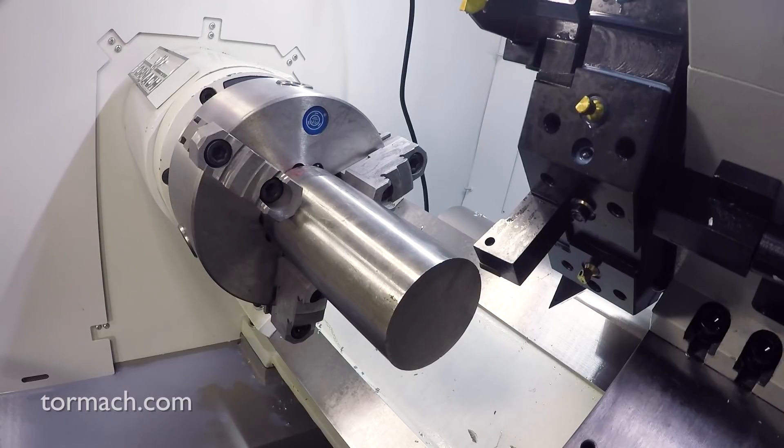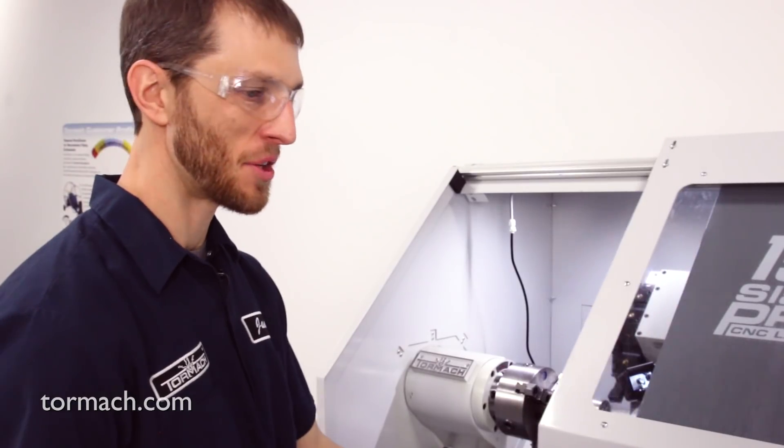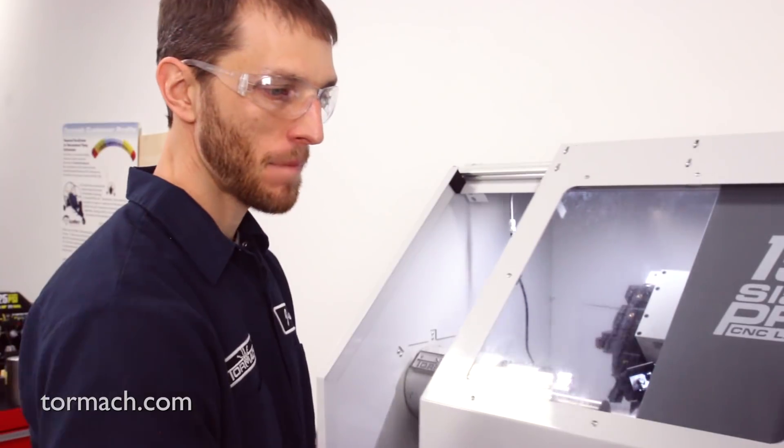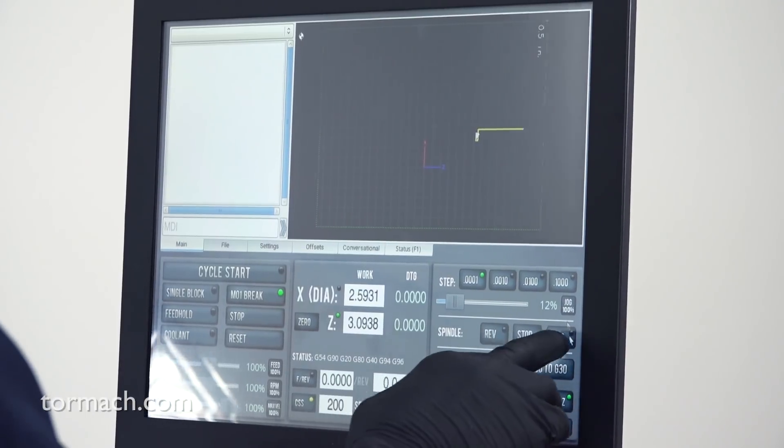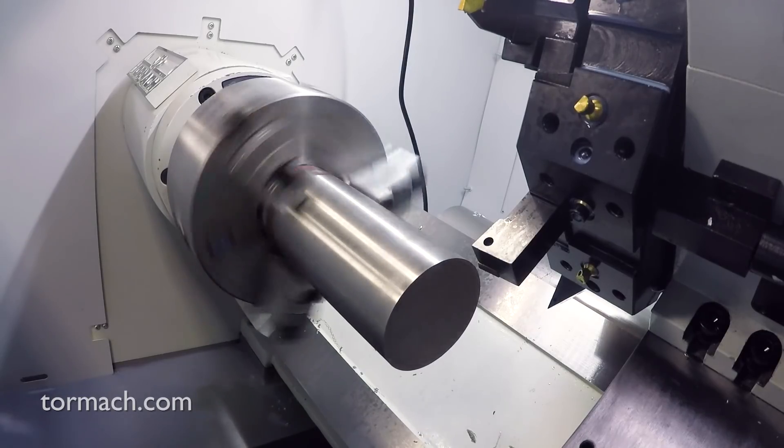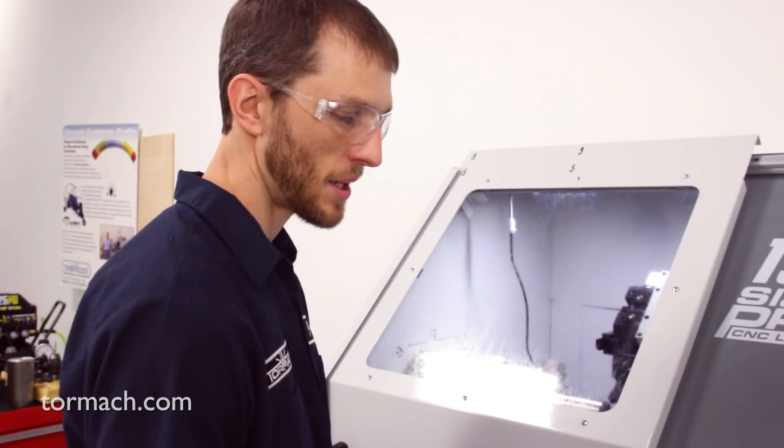So I got the stock loaded up here, I'm just going to turn it on at a conservative value. If it is some sort of stainless steel, my starting point is always 200 to 350 surface footage. I'll be conservative, I'll go ahead and turn it on at 200 surface footage, start up our spindle, and see what kind of chips we get.